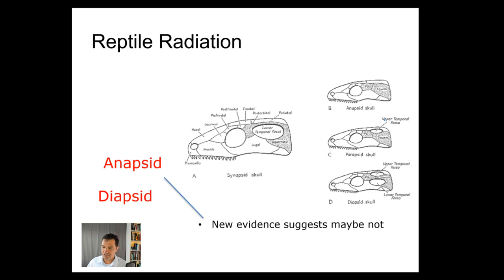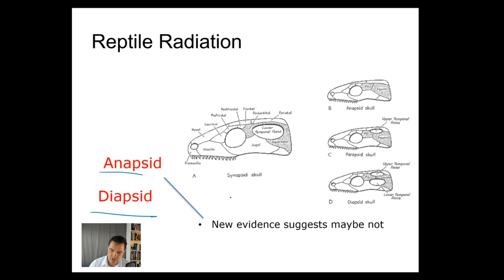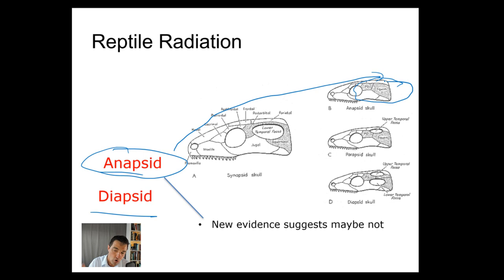Before we go too far, we have to talk about the difference in skull types. We have several different skull types that come up in evolutionary history. The first is what we call an anapsid skull, which means it's a solid plate of bones. This was originally thought to be a very ancestral type of skull, and later we evolved these holes in the side of the skull — not into the brain, but arches that allowed for more muscle attachment. New evidence suggests the turtle skull may be newer than originally thought.